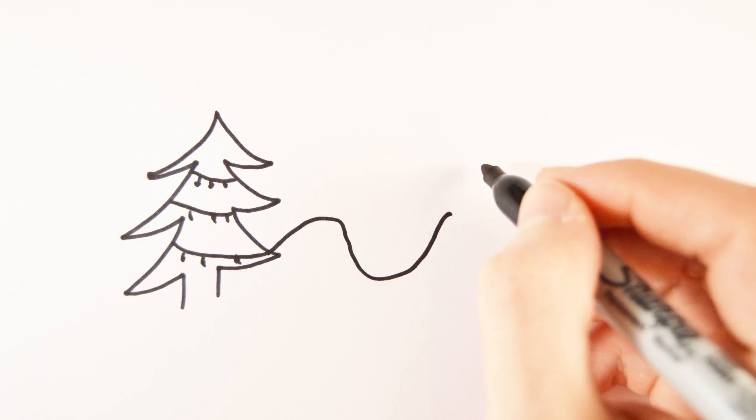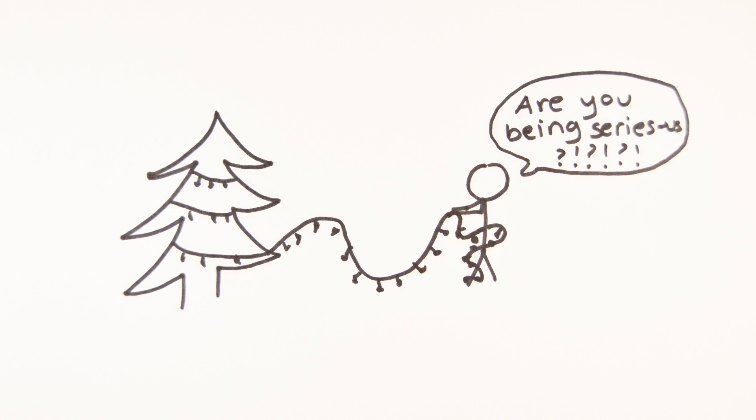If one lamp were to break in a series circuit, all the lamps would stop working so it's hard to tell where the source of the problem is.